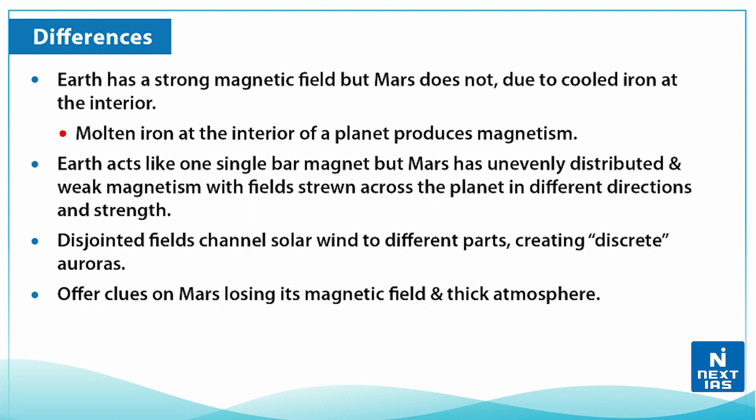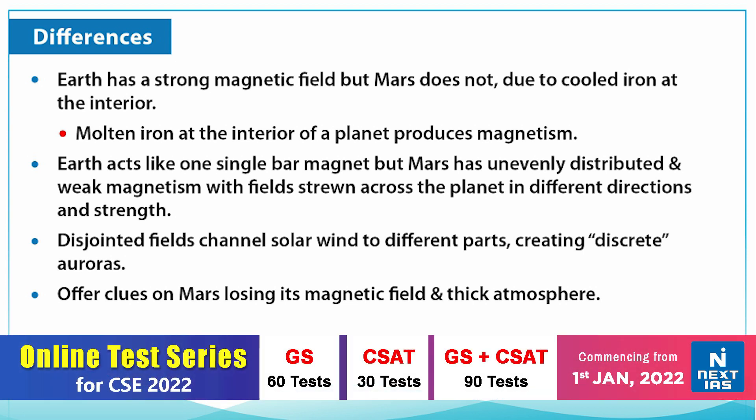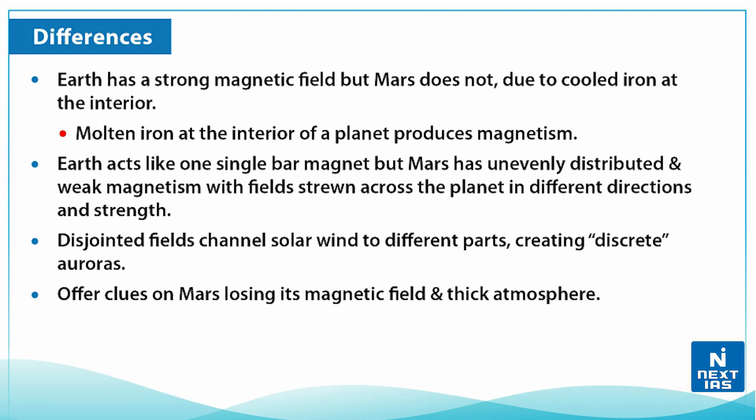Now, what are the differences between these lights on Earth and on Mars? Earth has a strong magnetic field, but Mars does not. The reason is the presence of molten iron at Earth's interior — molten iron is required to produce magnetism, and since the Earth satisfies this condition, it produces magnetism.